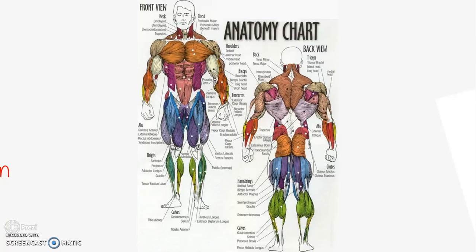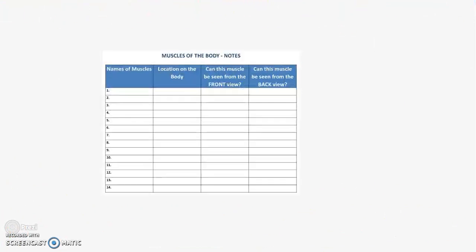As you go through the presentation you should pause the video on each slide and write down the information presented. To do this you should create a 4 column chart with 14 rows just like you see here. The first column should be titled names of muscles. The second column should be titled location on the body. The third column should ask can this muscle be seen from the front view. And the fourth column should ask can this muscle be seen from the back view.